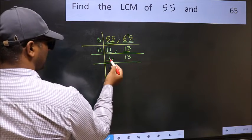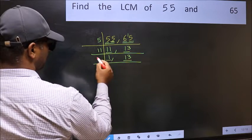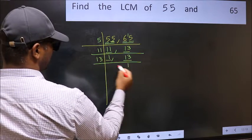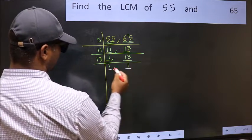Now we got 1 here, so focus on the next number 13. 13 is a prime number, so 13 once 13. We got 1 in both places.